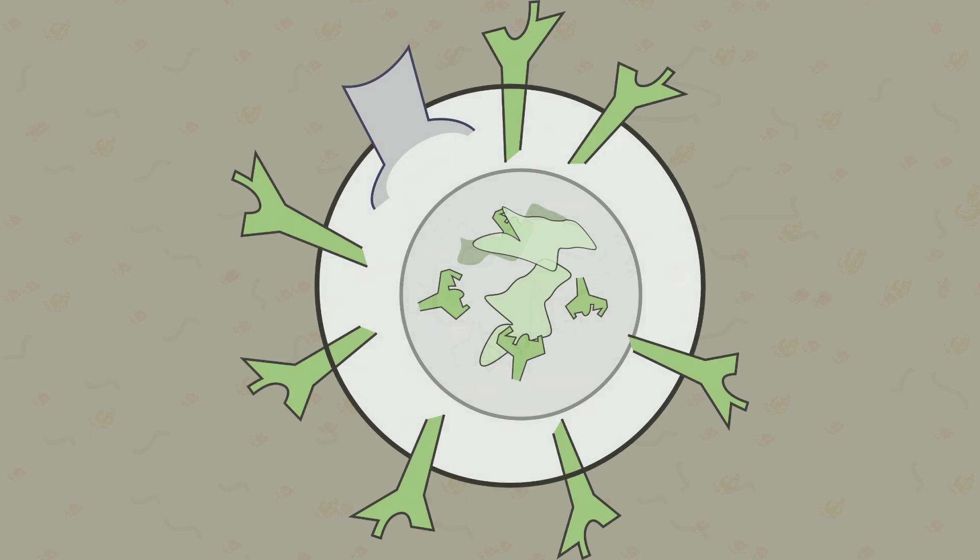Once the antigen is broken into pieces, the phagocyte moves a piece of the antigen to its outside surface. This is known as antigen presentation because the antigen is presented to other cells of the immune system to engage them in the process of assisting with the fight.